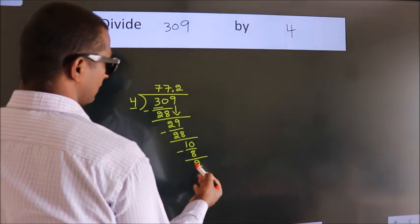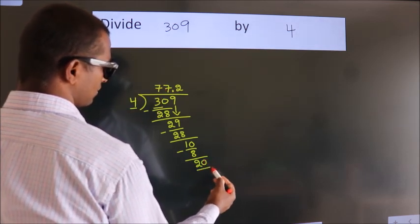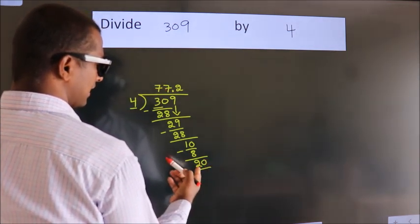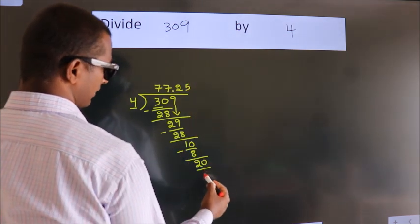After this, we already have the decimal, so directly take 0. So 20. When do we get 20 in the 4 table? 4 times 5 equals 20.